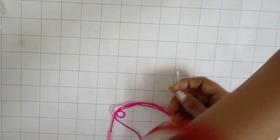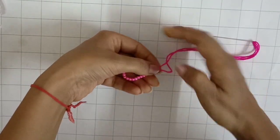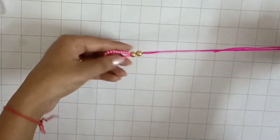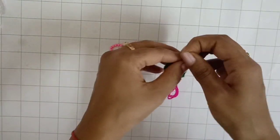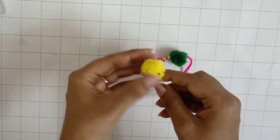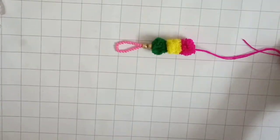And now I will put all the pom poms. So the colors you can completely take on your choice. I bought green, yellow, and pink because all the festive dresses. You can add red and orange also if you want.